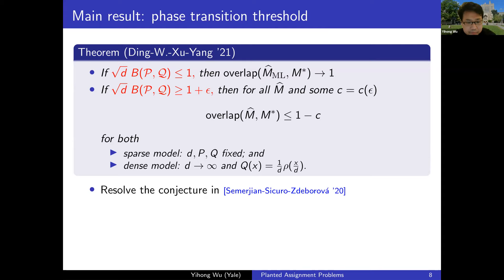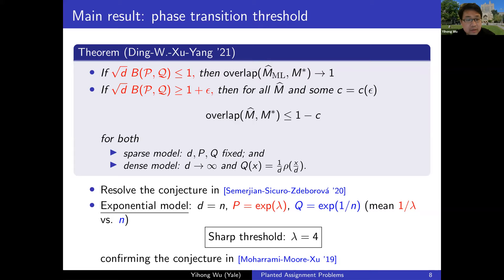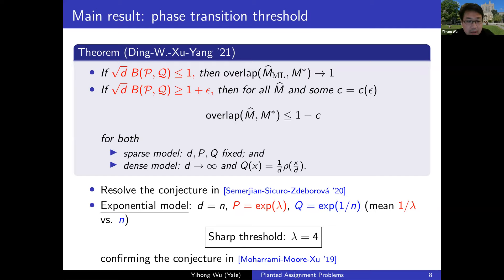Specializing to the exponential model—the planted counterpart of the random assignment problem—both edge weight distributions are exponential. One is exponential with rate λ (constant mean), and the other is exponential with rate 1/N (mean N). The minimum of N exponential(1/N) variables gives exponential(1), which is competitive with P. In this regime the sharp threshold reduces exactly to λ = 4. This was conjectured in the paper of Moharani et al. who analyzed linear assignment. So if λ is above 4, you can achieve perfect overlap; if below, it is not possible.